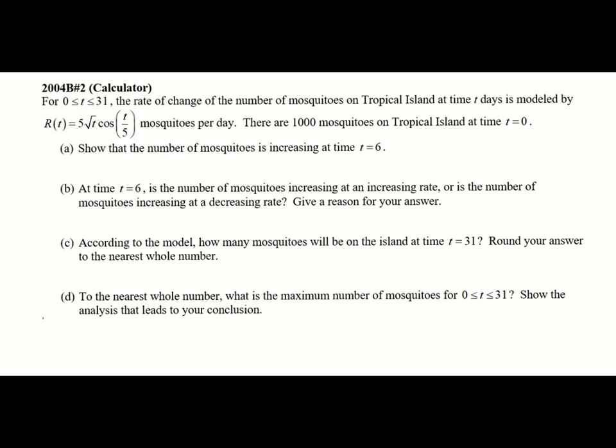The prompt reads: for T values from 0 to 31 inclusive, the rate of change of the number of mosquitoes on tropical island at time T days is modeled by R of T equals 5 times the square root of T times cosine of the quantity T divided by 5, mosquitoes per day. There are 1,000 mosquitoes on the island at time T equals 0.